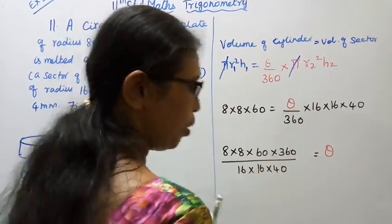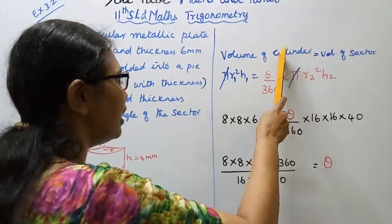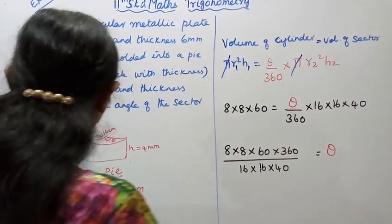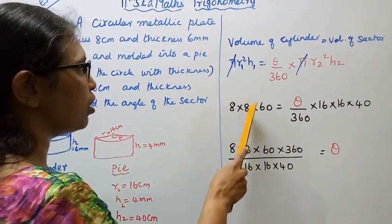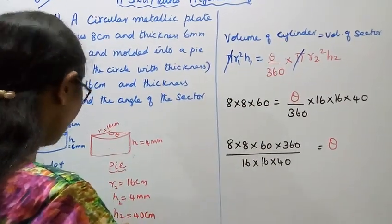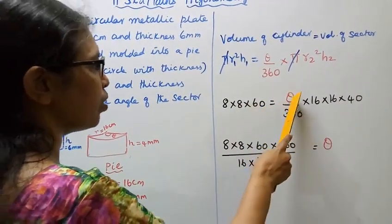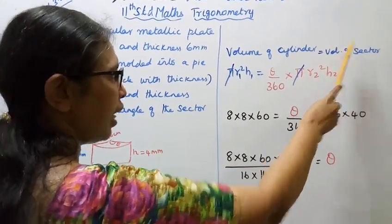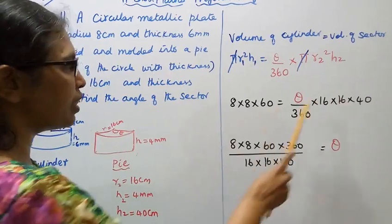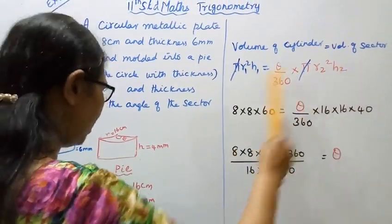For the cylinder: 8 squared times 0.6 equals theta by 360 times, for the sector, 16 into 16 into 0.4.